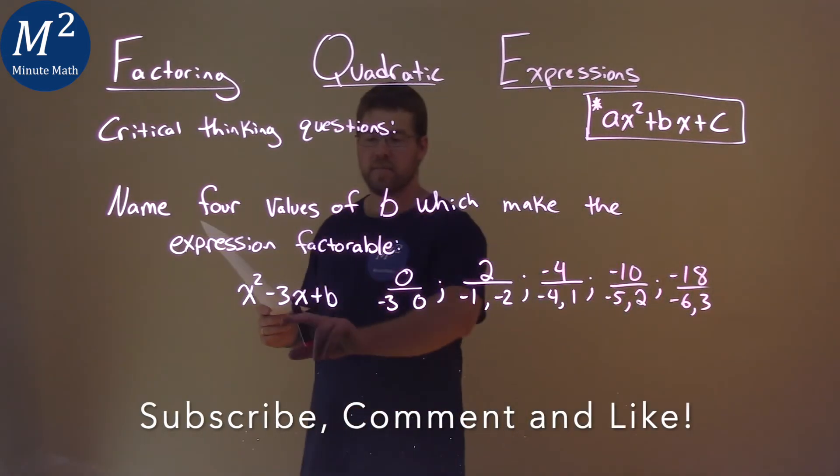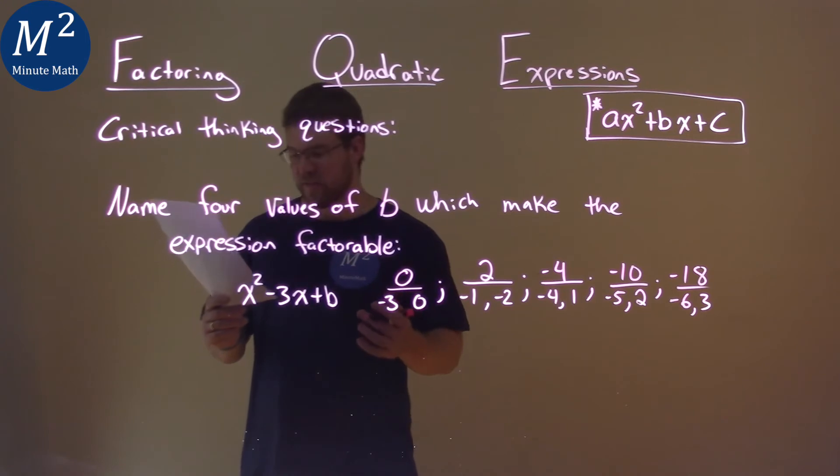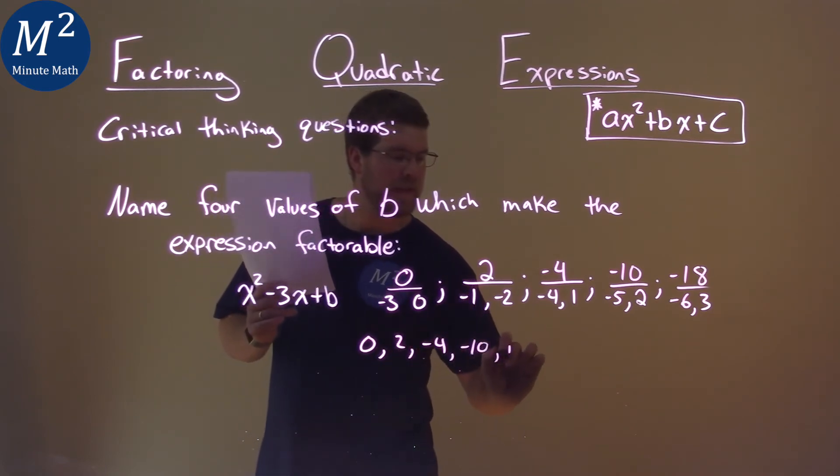And actually there's many answers here. This is just 4 of them, named 4 or 5 actually. So I would add 0, 2, negative 4, negative 10, and negative 18.